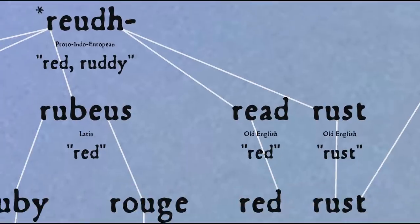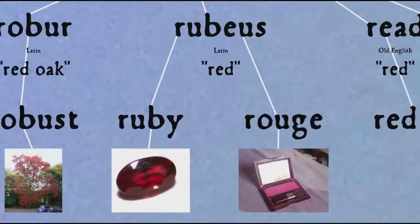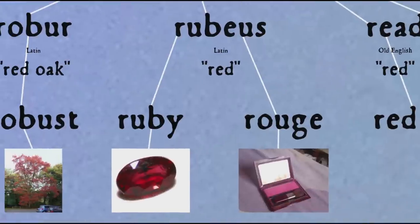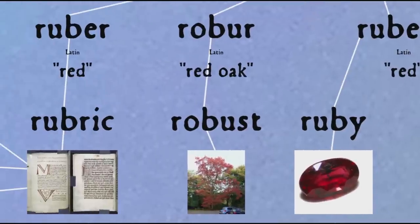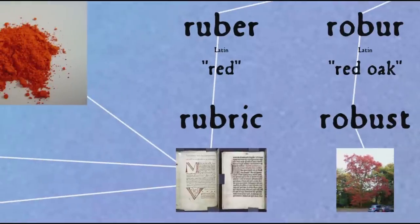Red and rust come from the Proto-Indo-European root 'reudh', meaning red or ruddy, both through the Germanic branch. Through Latin 'rubeus' (red) we also get 'ruby' and 'rouge' — the French word for red, now used in English to refer to makeup. 'Robust', 'rambunctious', and 'corroborate' also come from this root through Latin 'robur' (red oak), because of the hardness and strength of the tree. The word 'rubric' comes from this root because of the red lettering in medieval manuscripts used to mark divisions or special sections — that's where we get the expression 'red letter day'. The red ink was made from 'minium', also known as red lead or lead oxide.